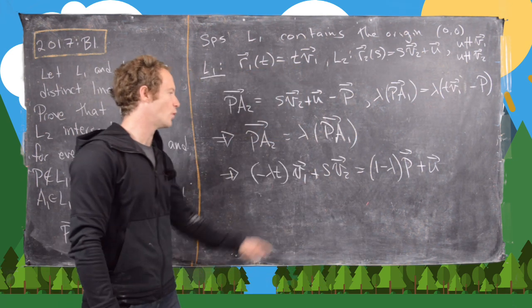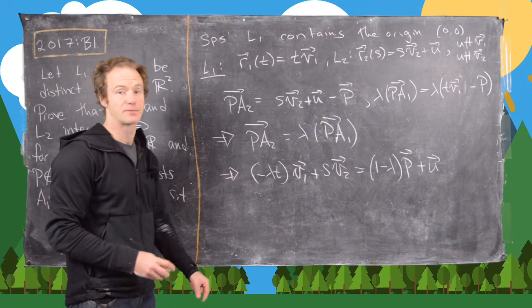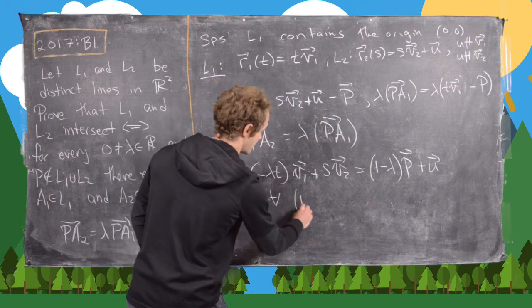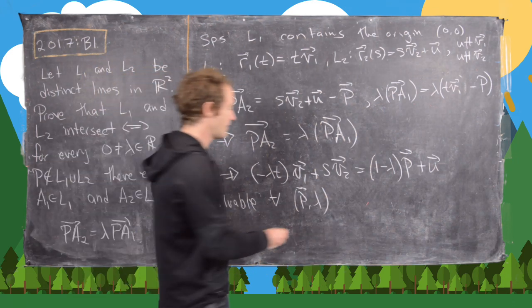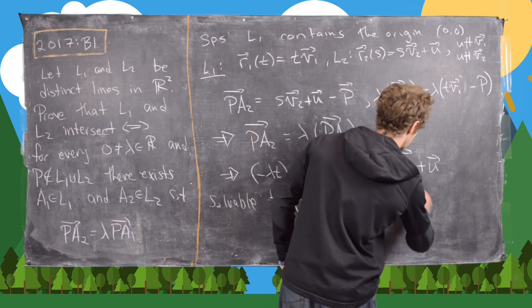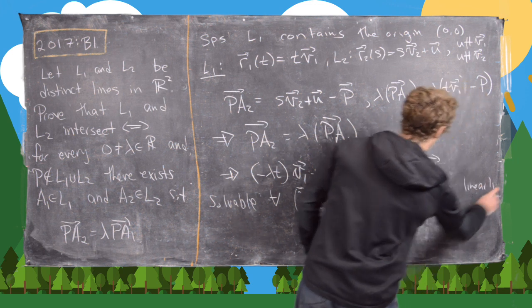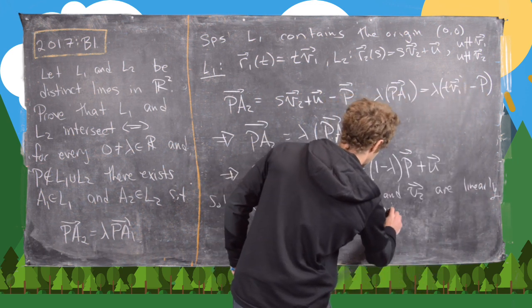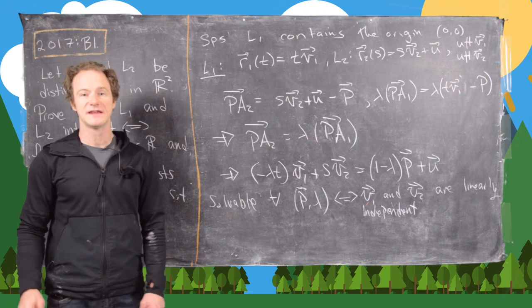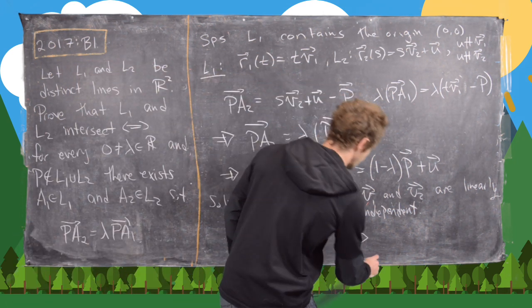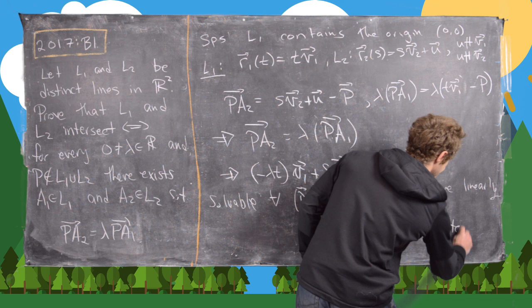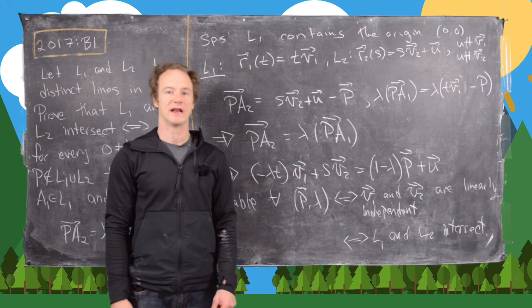The next question is when is this solvable for all lambda and T, and that's actually pretty easy to see. This is solvable for all ordered pairs P, lambda if and only if v1 and v2 are linearly independent. But if v1 and v2 are linearly independent, that is exactly equivalent to L1 and L2 intersect, which is what we wanted to end up with.